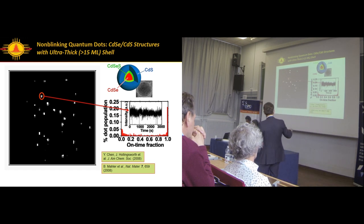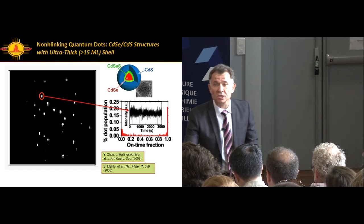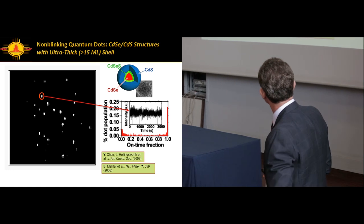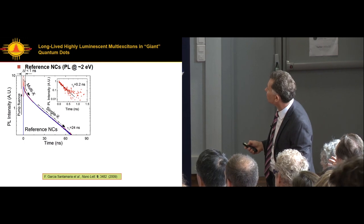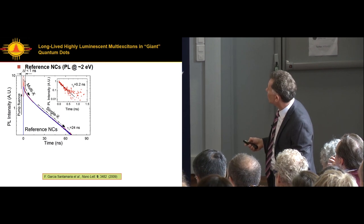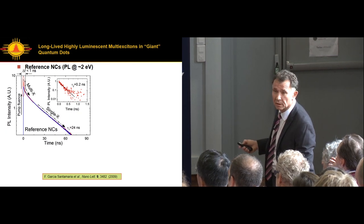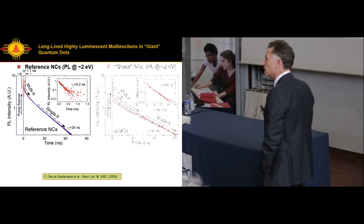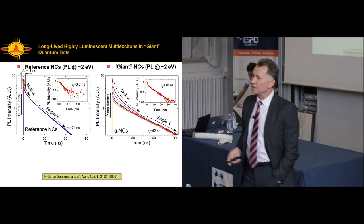Later we showed that blinking, at least in these thick-shell structures, is due to charging and discharging. You form a trion, a charged exciton. You activate Auger recombination, and that transfers the dot to the low emissivity state. Then the blinking was suppressed. What did it mean? We didn't know. Was it suppression of charging/discharging, or suppression of Auger recombination? Took us about a year to figure out what was going on.